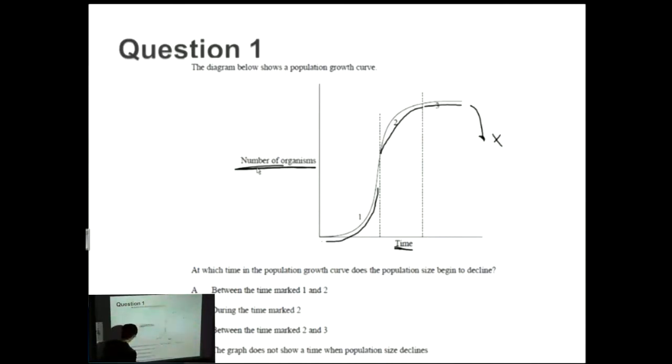So the answer for this case is D. The graph does not show a time when population size decreases. So then all the other ones are incorrect just because of that reason.